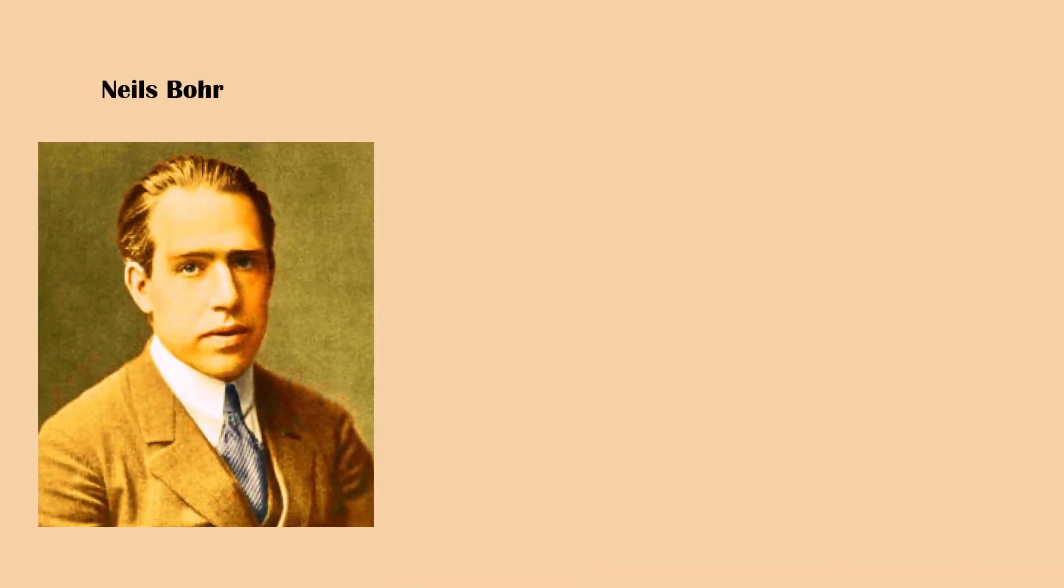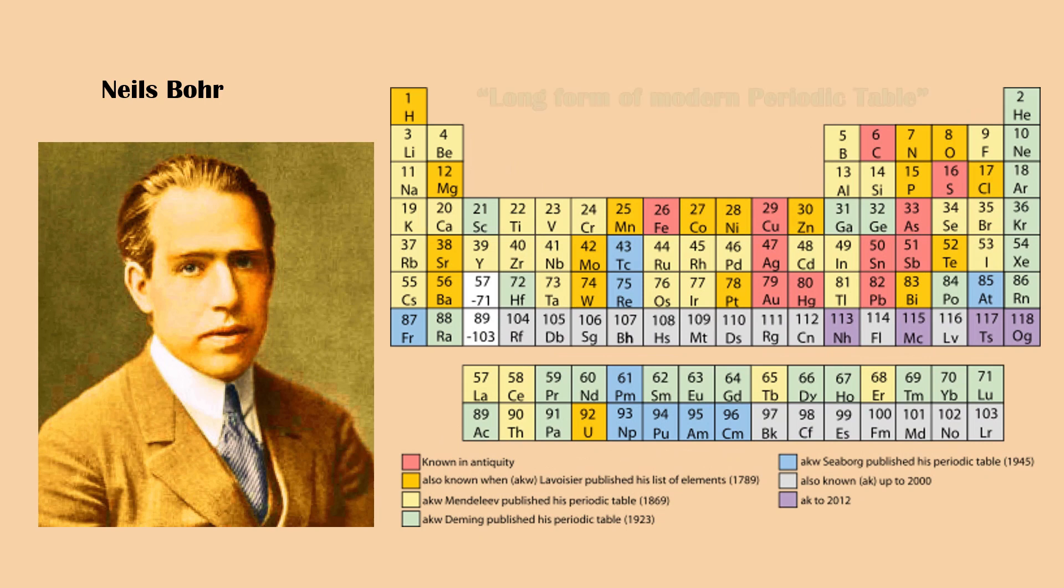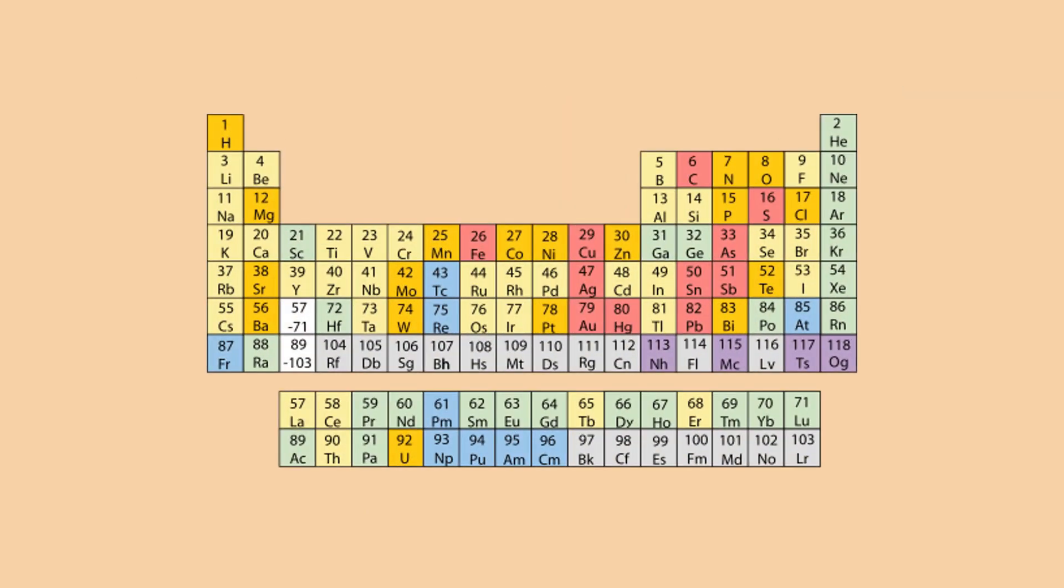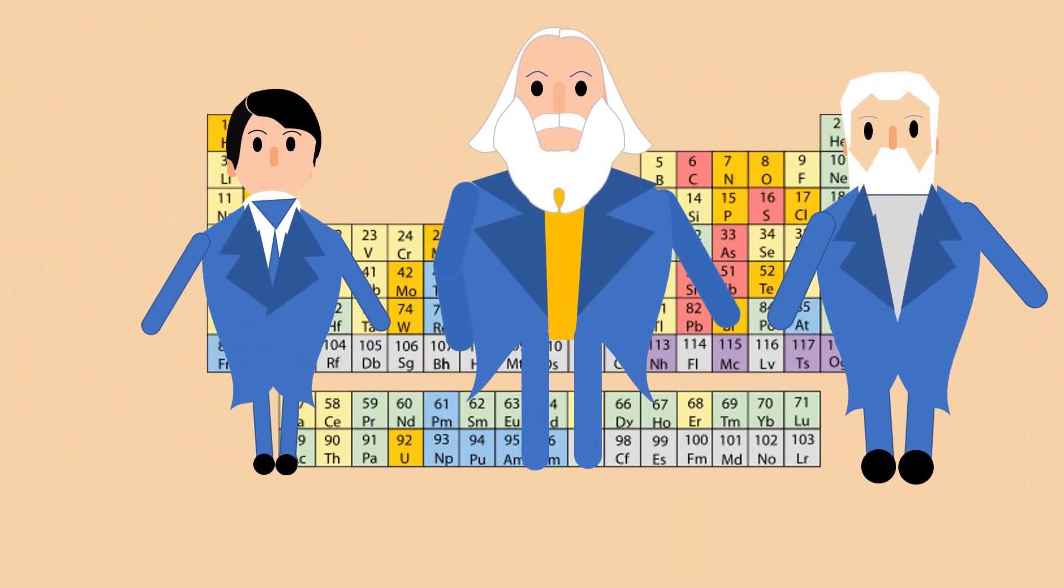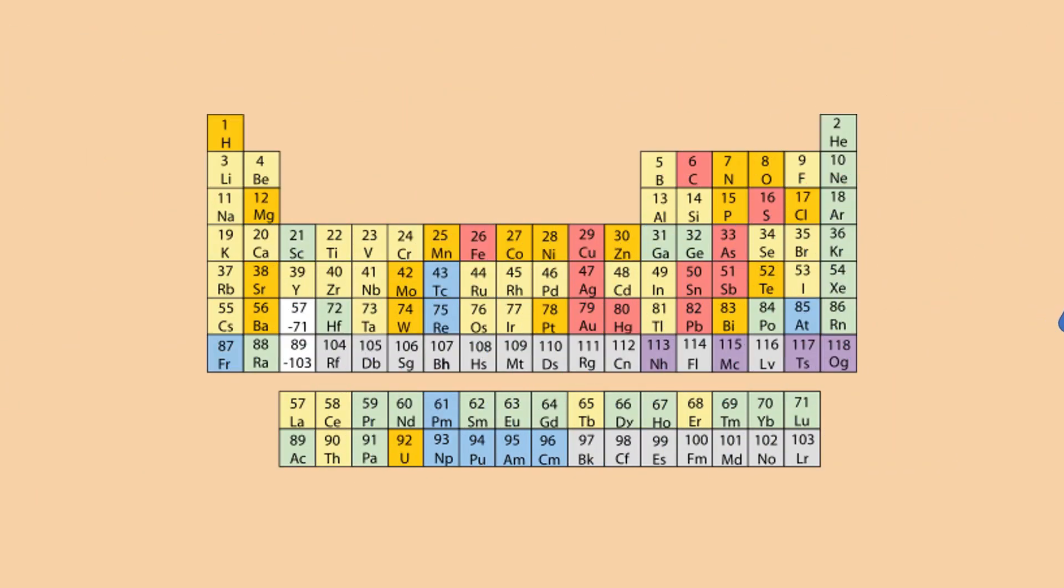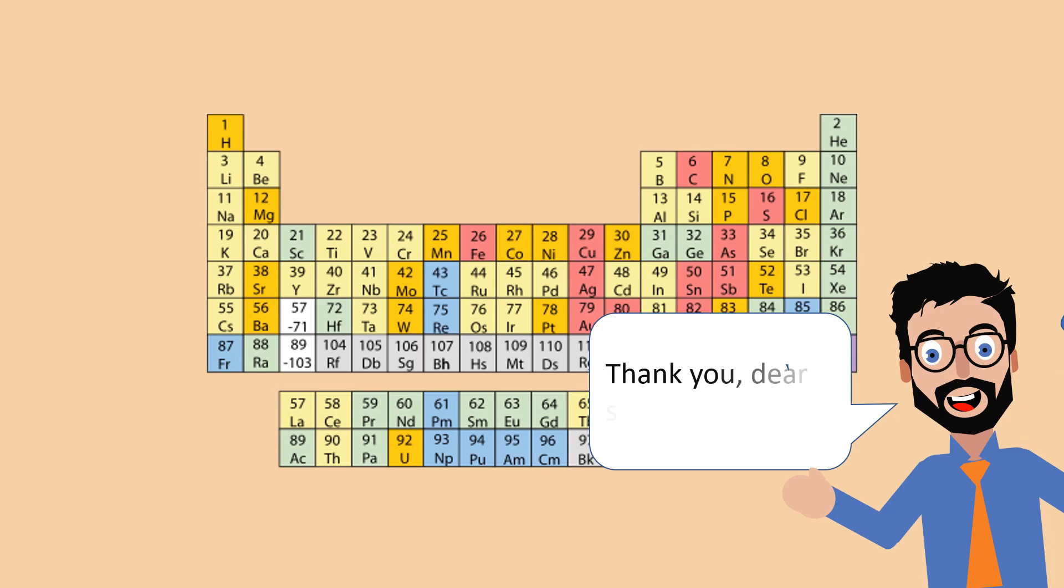Later on, Niels Bohr kept the extended form of the table known as the long form of the modern periodic table that hosts 118 elements currently and is still expanding with the discovery or invention of more and more elements. This periodic table was a lifetime of contribution by many workers. Their contribution has created a significant impact on the present world.